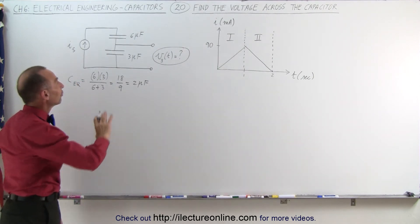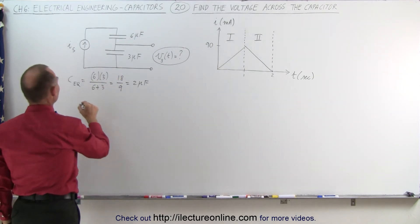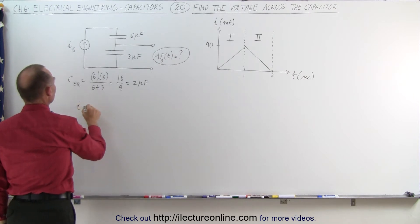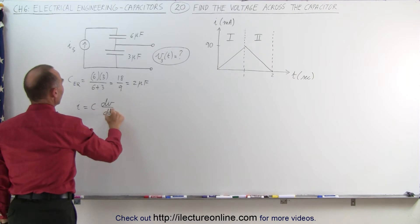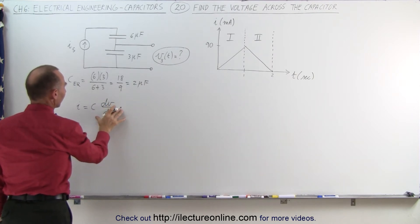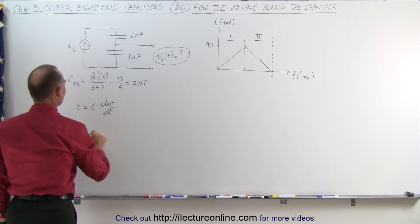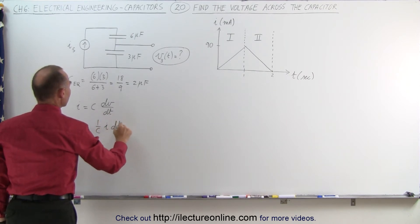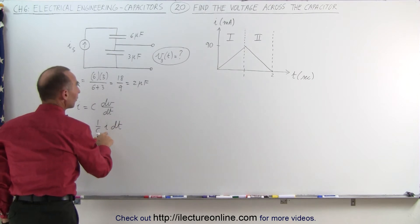So now we can find the voltage across both capacitors. We do that by saying that the current, I, is equal to the capacitance times the rate of change of the voltage over time. We can solve this for V by saying dV is equal to 1 over C times I dt, and now we have to find the equivalent of the current.